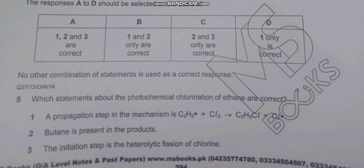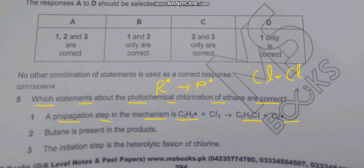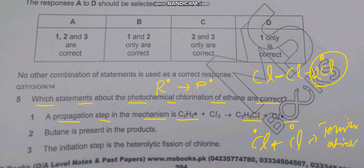Question five: which statements about the photochemical chlorination of ethane are correct? This is also an example of free radical substitution. To identify a propagation step: there must always be a free radical on both the reactant side and the product side. If there is no free radical on the reactant side but one on the product side, it is an initiation step. If free radicals are only on the reactant side, it is a termination step. Statement one is correct.